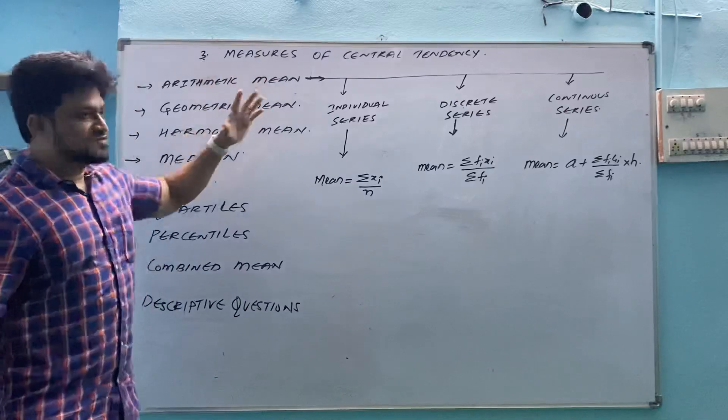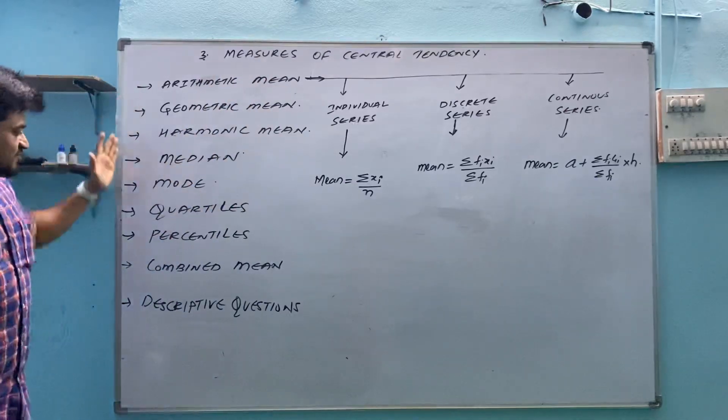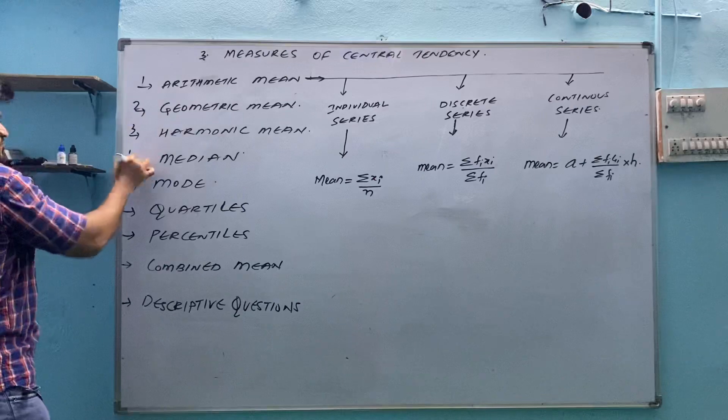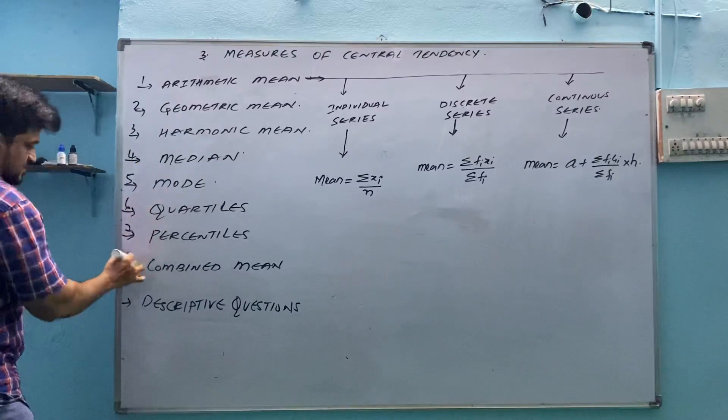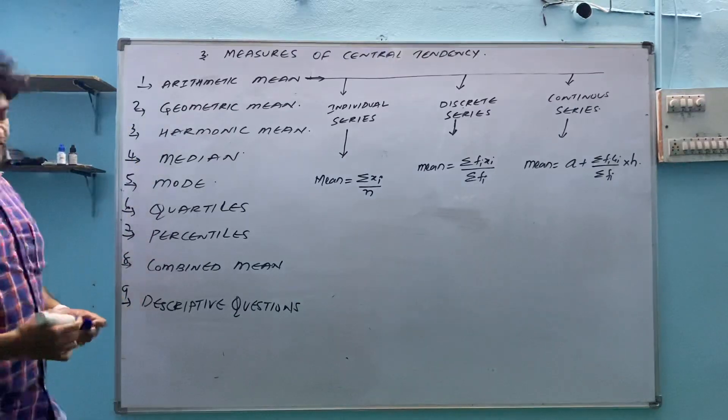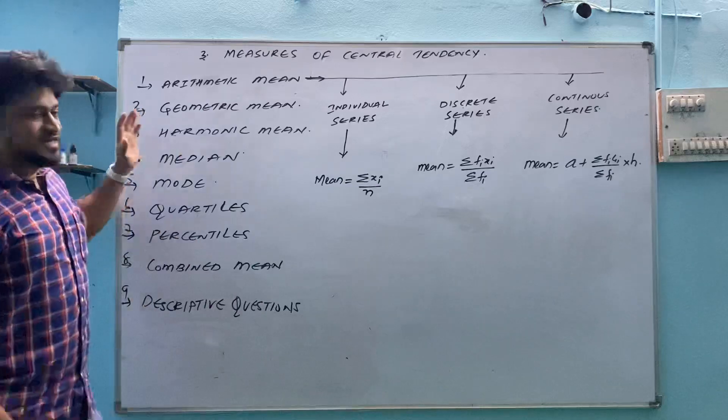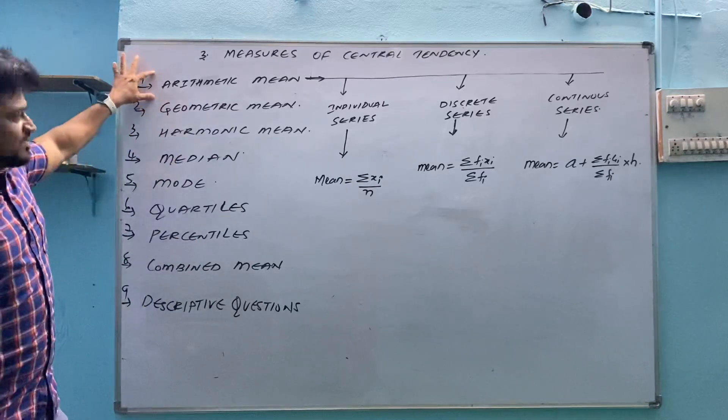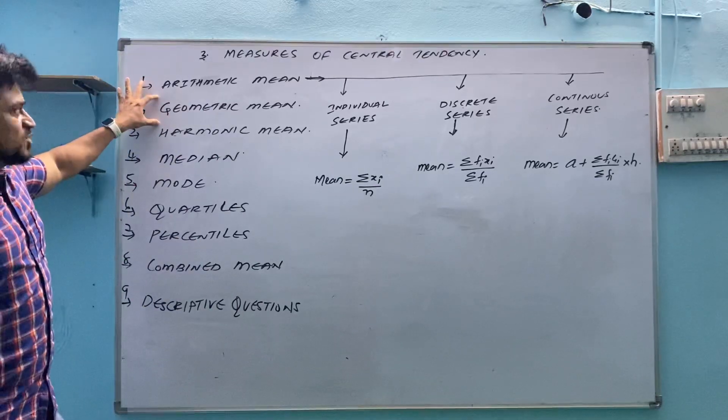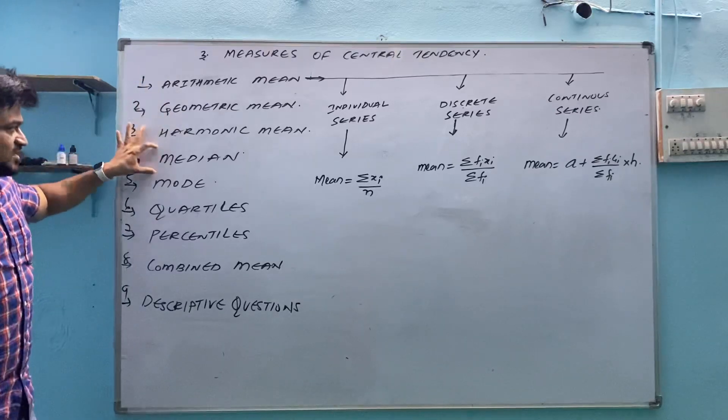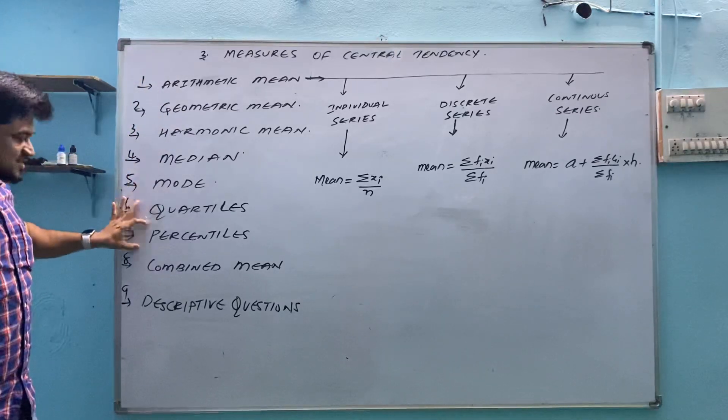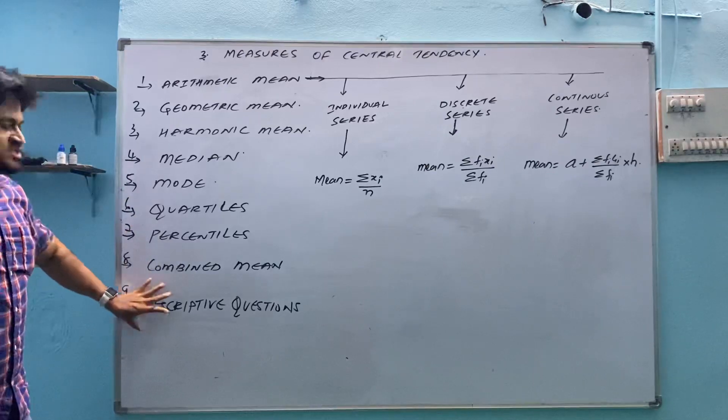Now in measures of central tendencies we have 1, 2, 3, 4, 5, 9 types of questions. In those 9 types of questions, first one is arithmetic mean, second types of questions belongs to geometric mean, third one harmonic mean, then median, mode, quartiles, percentiles, combined mean, descriptive questions.